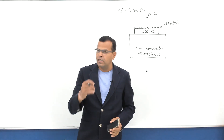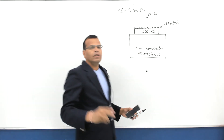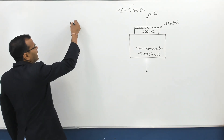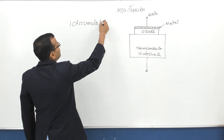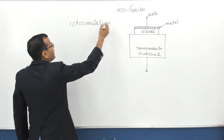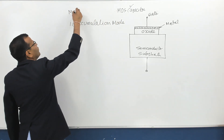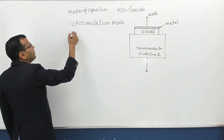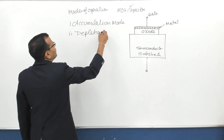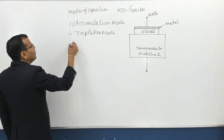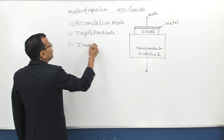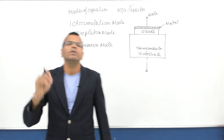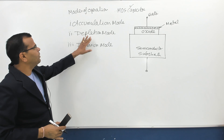So before we talk about MOSFET, I need to talk about the MOS capacitor for better understanding of the MOSFET as a device. A MOS capacitor works in three modes of operation: the first is called accumulation mode, the second is called depletion mode, and the third is called inversion mode.